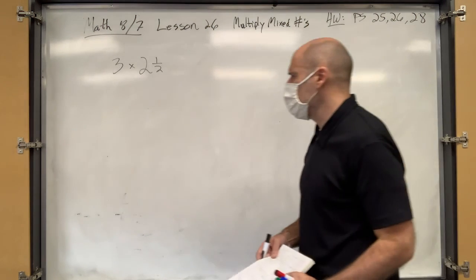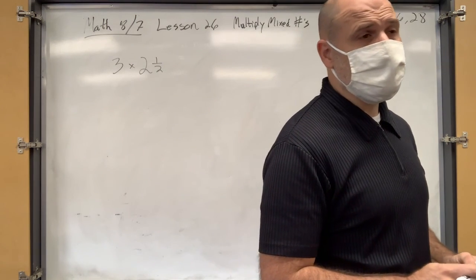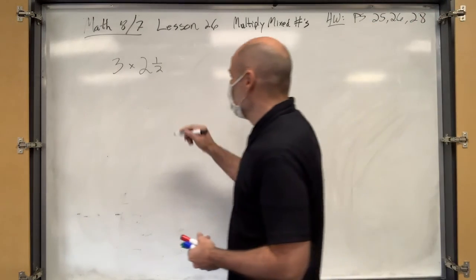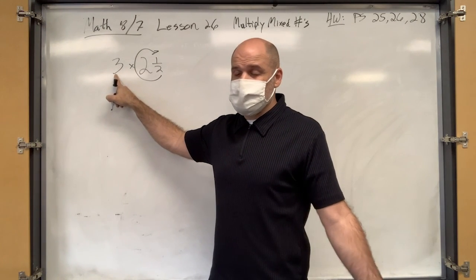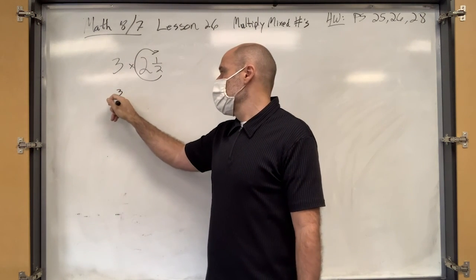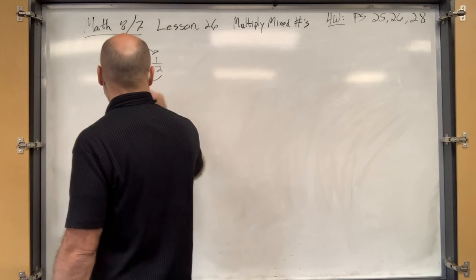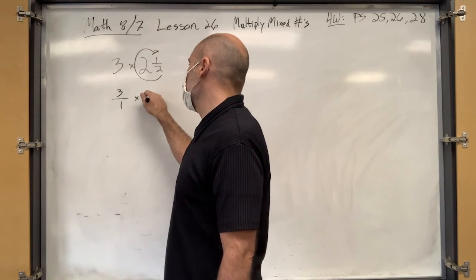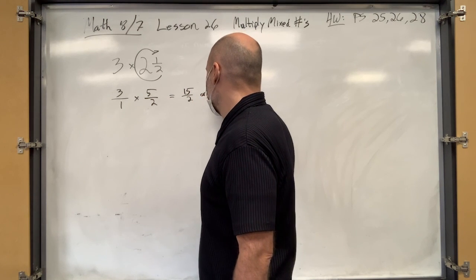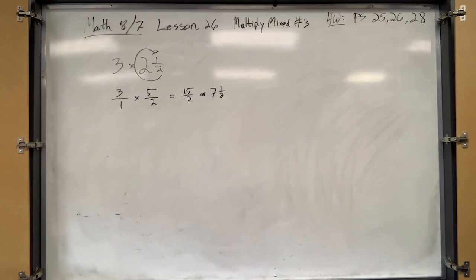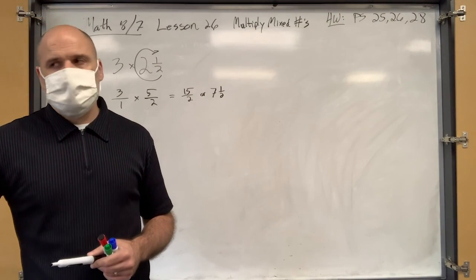Seven and a half — right. So we don't multiply mixed numbers. Let's change them to improper fractions. We can change three to a fraction: three over one. Times five over two gives us fifteen over two, which is seven and a half. Both answers are acceptable, but I like improper fractions more because once you get into algebra, they're much easier to work with.